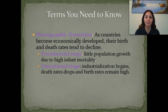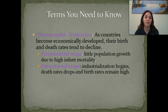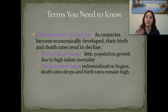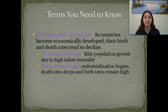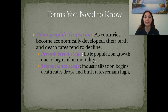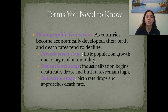Demographic transition is when countries become economically developed, their birth and their death rates tend to decline. The pre-industrial stage is when little population growth occurs due to a high infant mortality rate. The transitional stage is when industrialization begins and death rates drop while birth rates remain the same. Death rates drop because of medical care, cleaner water, cleaner food, and better access to medicines such as antibiotics. The industrial stage is when the birth rate drops and approaches the death rate.